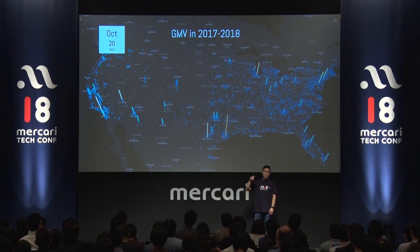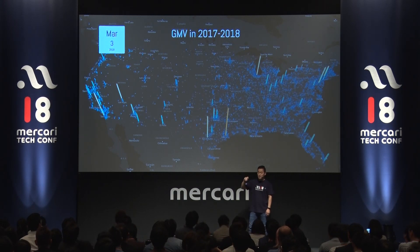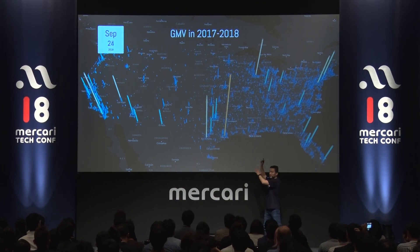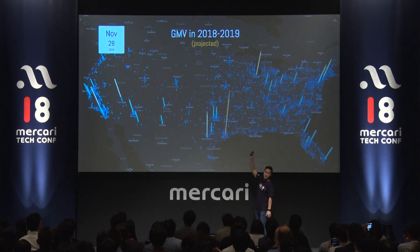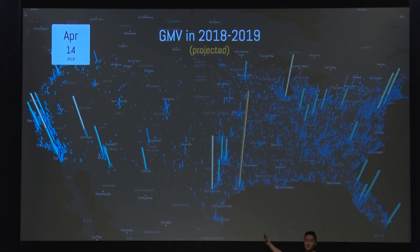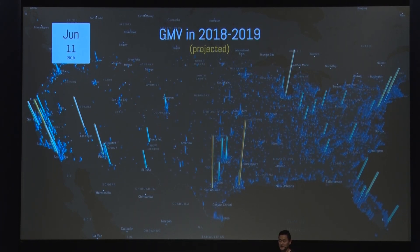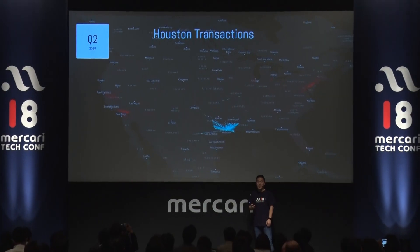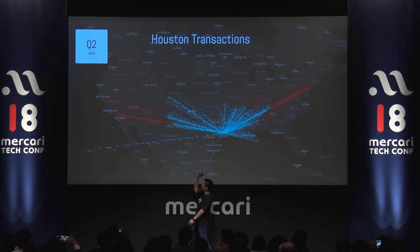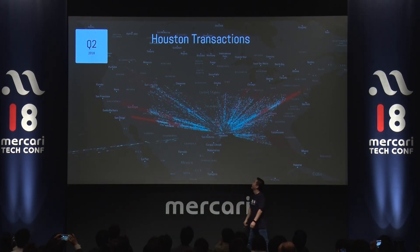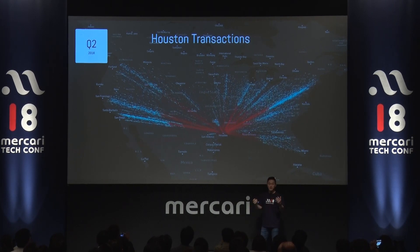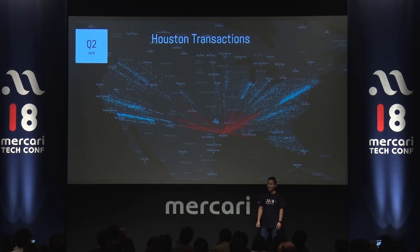So let's talk about data. This is the GMV — gross merchandise volume — in the US, from 2017 and 2018. You can see the seasonality and the time, and it goes up and down, and you see a lot of cities lighting up. You can see Houston right there is kind of spiking up — Houston, Texas. We can then take a look at transactions happening in Houston: the blues are the ones shipping out, and the reds are the ones shipping in. You can see people shipping all the way to Hawaii, and from all major cities, shipments are coming in. That's a lot of data and transactions happening, and this is just one quarter.